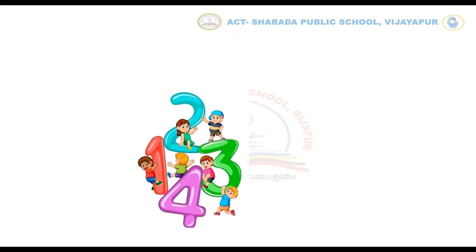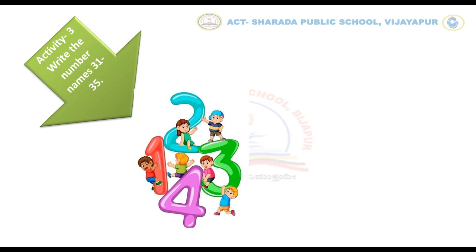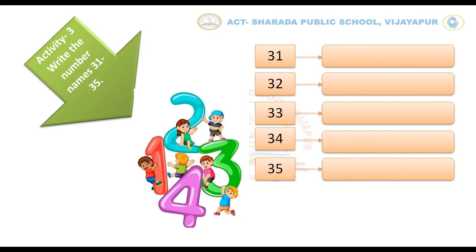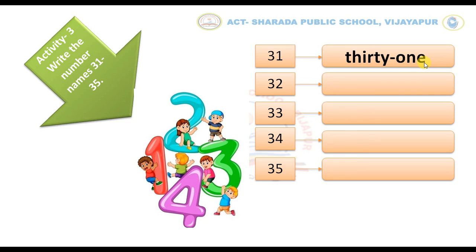Let us move to our next activity. That is, write the number names from 31 to 35. Dear parents, make your child identify the number and help them to write the correct number name. For example, kids, can you identify which number it is? Yes, you are right — it is 31. Then you have to write the number name: T-H-I-R-T-Y O-N-E — 31.